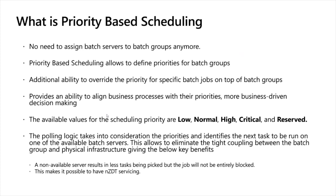With PBS, it's more about aligning batch job priority based on business processes and needs. In the legacy platform, if you wanted to run a critical job, the business user had to reach out to the admin to create a new batch group and dedicate servers. Now with PBS, you can simply use the highest priority at the time of scheduling without needing to talk to the admin and do batch server and group alignment. It's a business-driven approach rather than a predefined server and batch group setup.